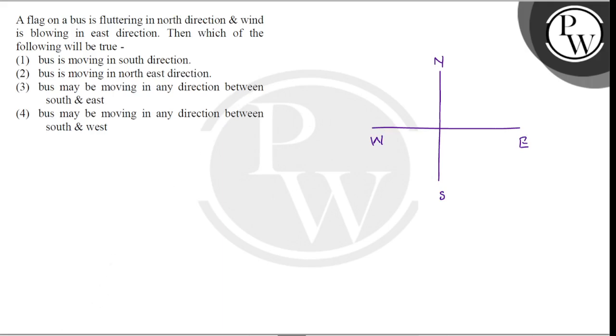And the flag can be fluttering in this direction. This is the direction of fluttering of flag. Flag can be fluttered. And if we assume that the flag is fluttering in the north direction, this is the direction of fluttering in the north direction.